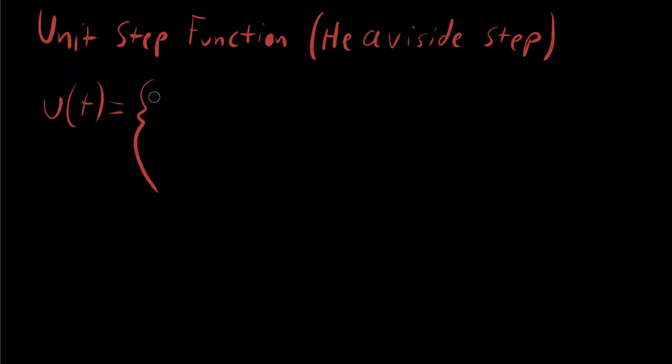The value of the unit step function is zero when t is less than zero, and it's one when t is greater than zero.